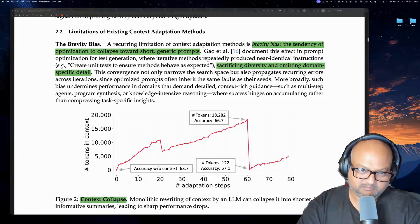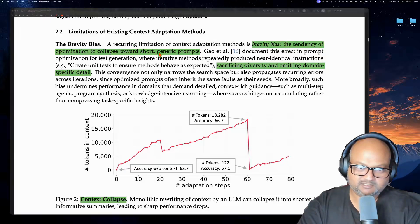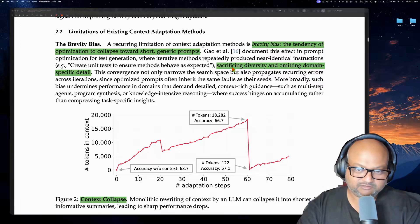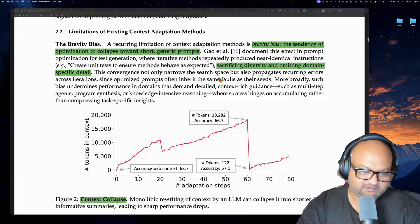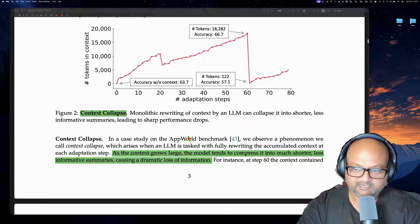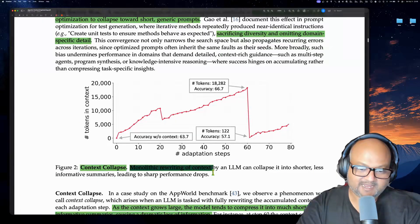There are two main problems with these current methods that the authors are pointing out. The first is what they call brevity bias, which means that LLMs, as they look at the context and make iterations in an agent, have a strong tendency to shorten and summarize these prompts. Done iteratively, you end up with very short, very generic prompts and lose all the domain-specific details, notes on important failure modes, and how to solve them. This leads to a related problem: context collapse, where because of this tendency toward shorter summaries, you end up losing a lot of information, which ultimately shows up in much lower task accuracy.